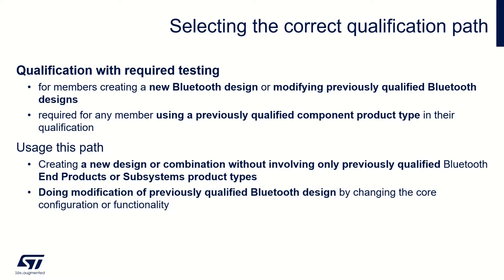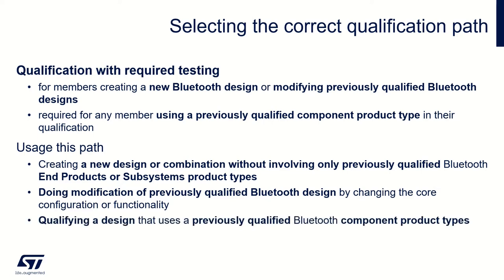Use the required testing path when modifying a previously qualified Bluetooth design by changing the core configuration or functionality, or when qualifying a design that uses previously qualified Bluetooth component product types. When qualifying with a previously qualified component product type, you may or may not have to perform additional testing based on the assessment date and TCRL — the Test Case Reference List — version to which the component was qualified. Members can inherit test evidence for conformance test cases if the component was assessed within three years of the listing date of your project.